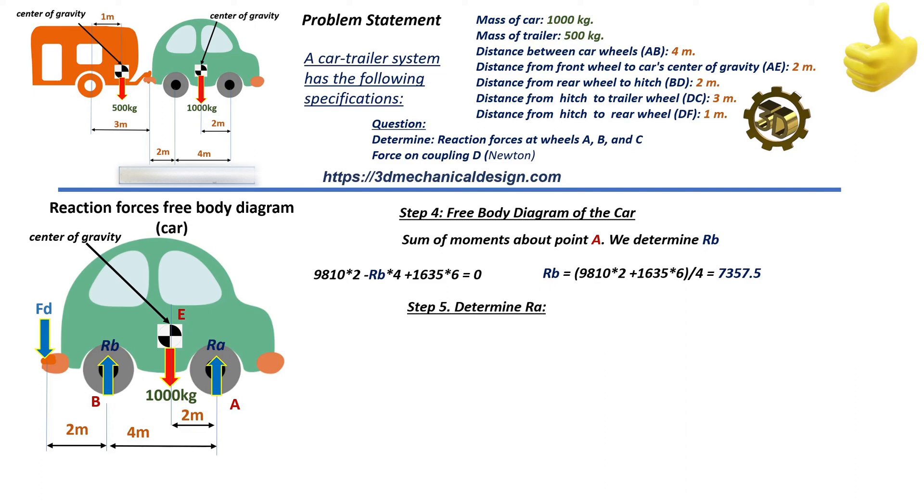Step 5: Determine RA. Method 1: Sum of vertical forces on the car. RA equals W car minus RB plus FD equals 9,810 minus 7,357.5 plus 1,635 equals 4,087.5 newtons.